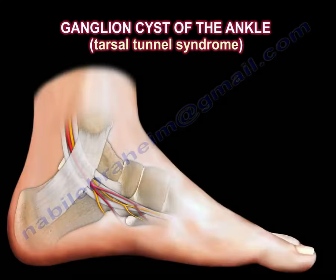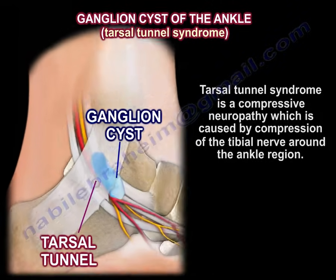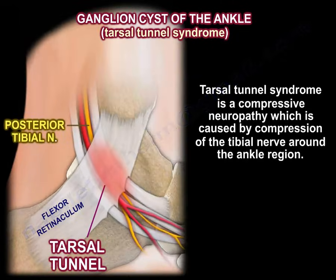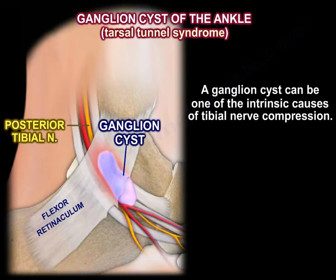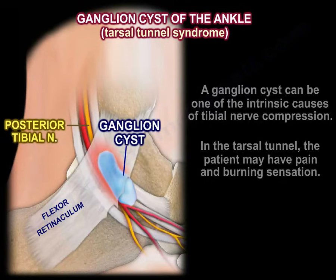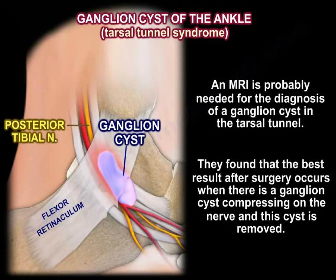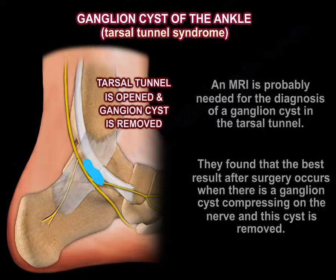Ganglion cysts of the ankle and tarsal tunnel syndrome. Tarsal tunnel syndrome is a compressive neuropathy caused by compression of the tibial nerve around the ankle region. A ganglion cyst can be one of the intrinsic causes of tibial nerve compression. In the tarsal tunnel, the patient may have pain and burning sensation. An MRI will likely be needed for diagnosis of the ganglion cyst. The best surgical results occur when a ganglion cyst compressing the nerve is identified and removed.